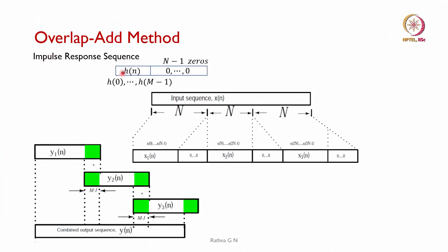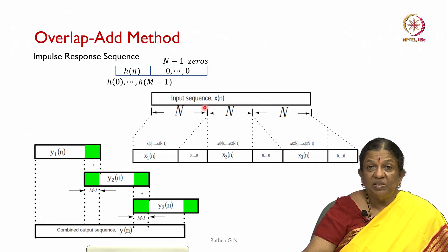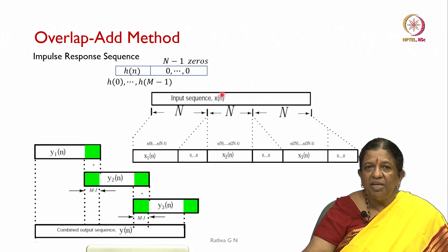This is the impulse response of the sequence, h(n), which has length m — from 0 to m. We will be adding N minus 1 zeros to this to make it a power of 2, that is N-length for our FFT. So we are going to pad zeros here. Then we consider all N-length sequences: the impulse response as well as the input signal, which is more than N length.